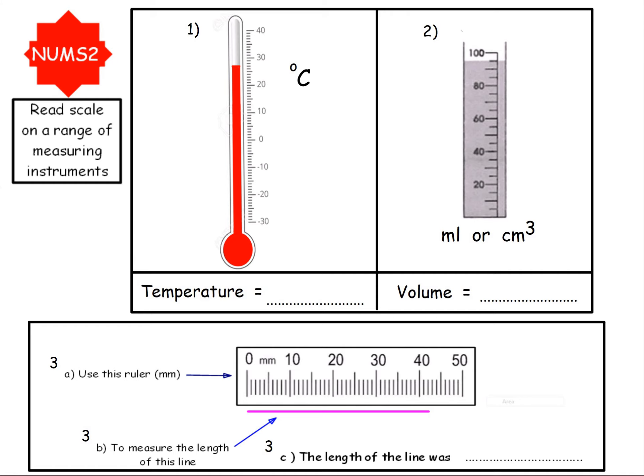We're looking here at reading the scale on a range of measuring instruments and you can see here number one is a thermometer, number two is a measuring cylinder and number three is a ruler.